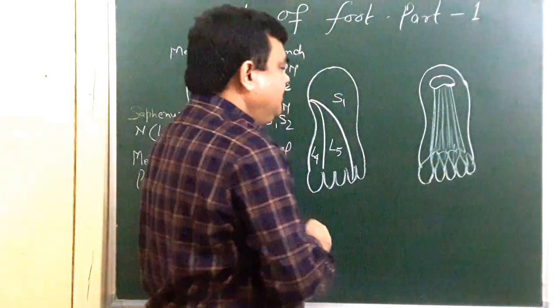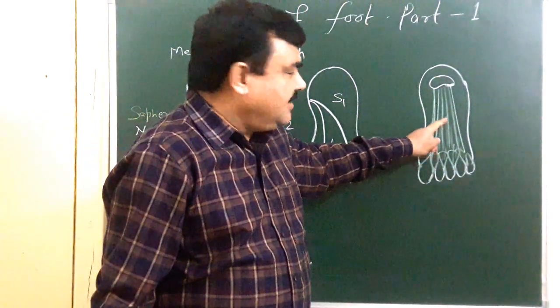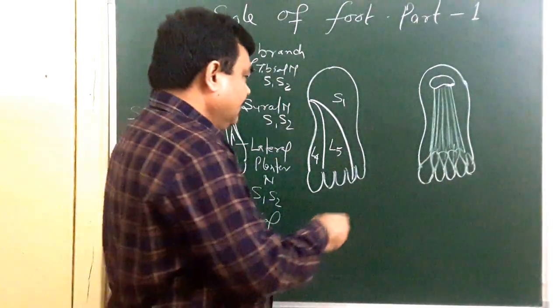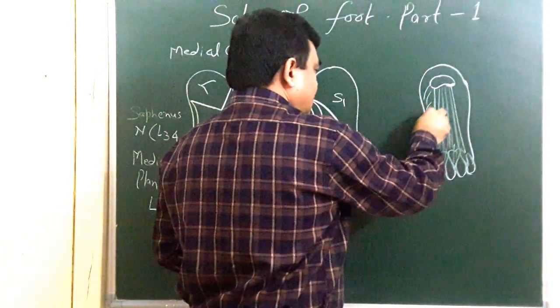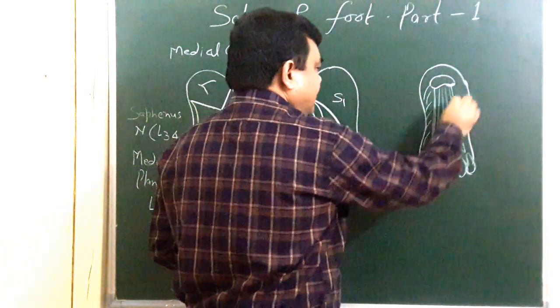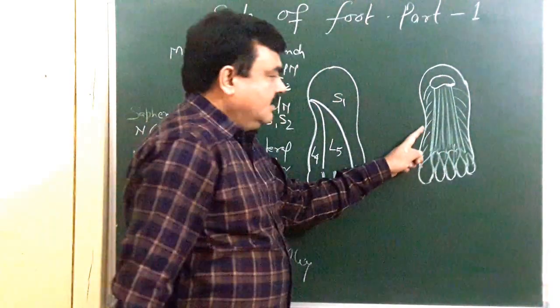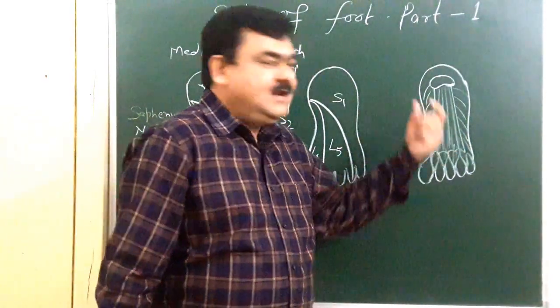So this is deep fascia. Here centrally thickened from plantar aponeurosis. And medially is thin part of deep fascia. You can find medially thin, laterally thin and centrally it is thick.